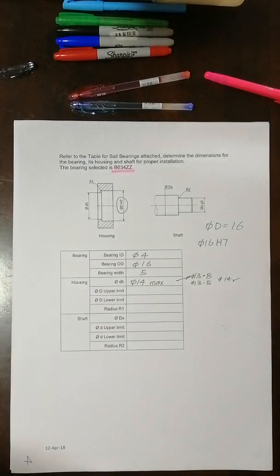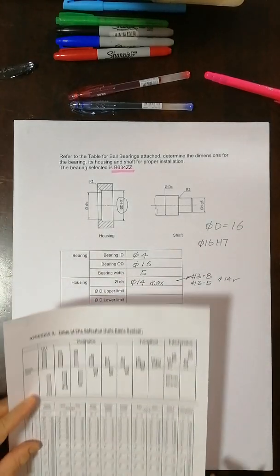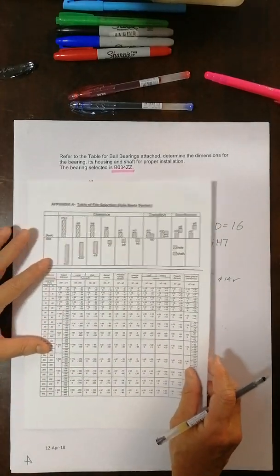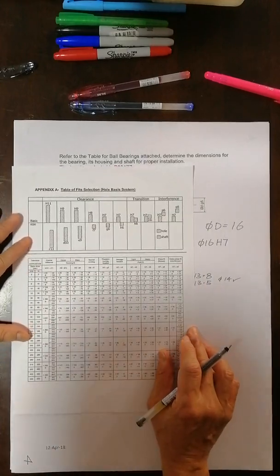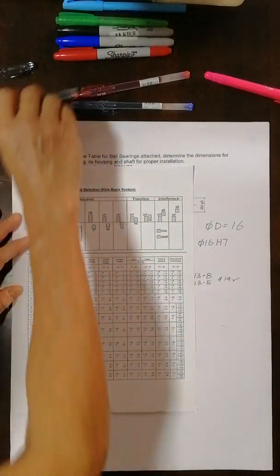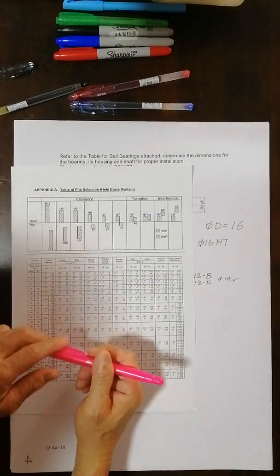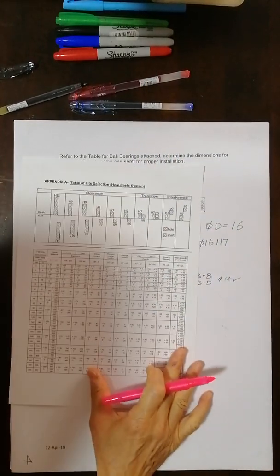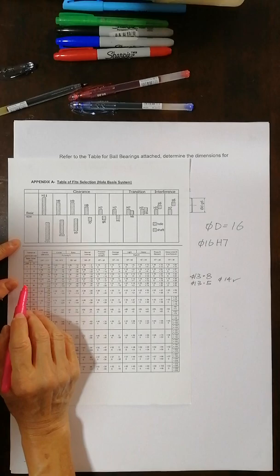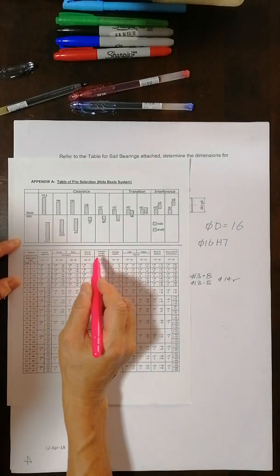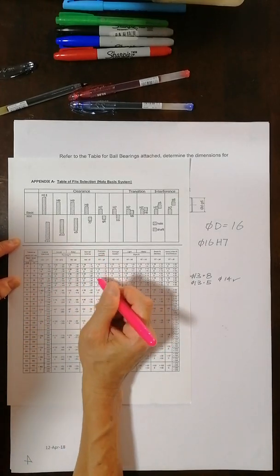So I need to go back to my table earlier. This table. Diameter 16. So I look at diameter 16. It's here and here. Diameter 16 H7. So I look for H7. Okay. I got these two numbers here.